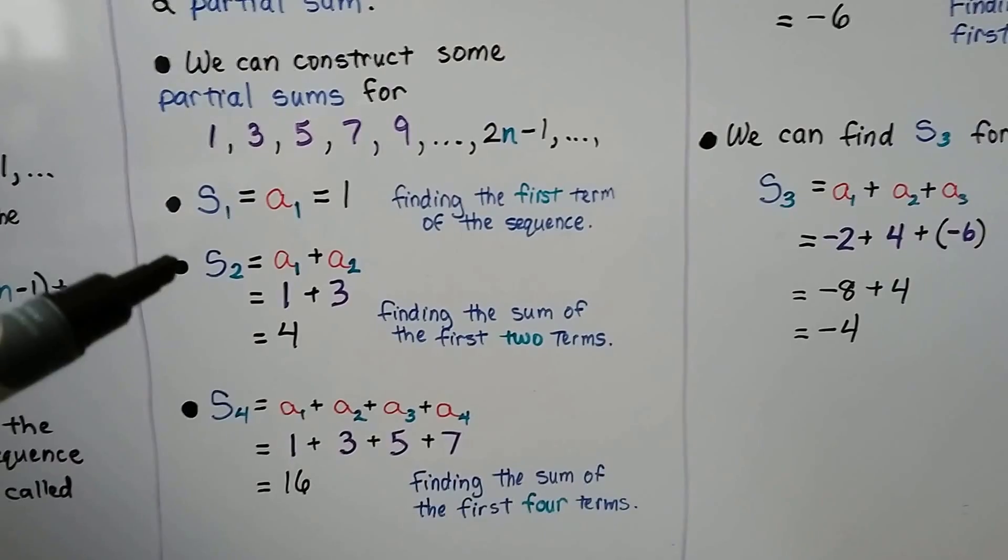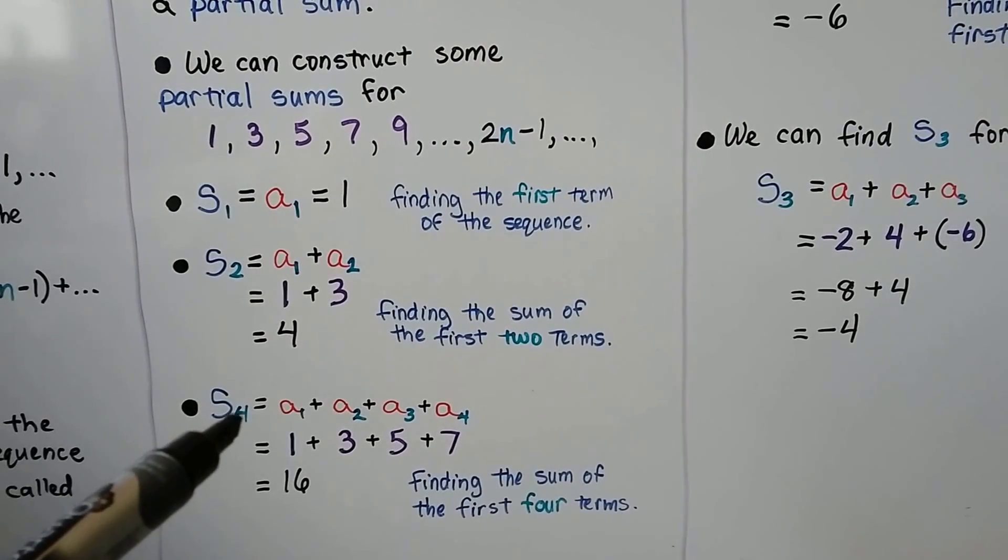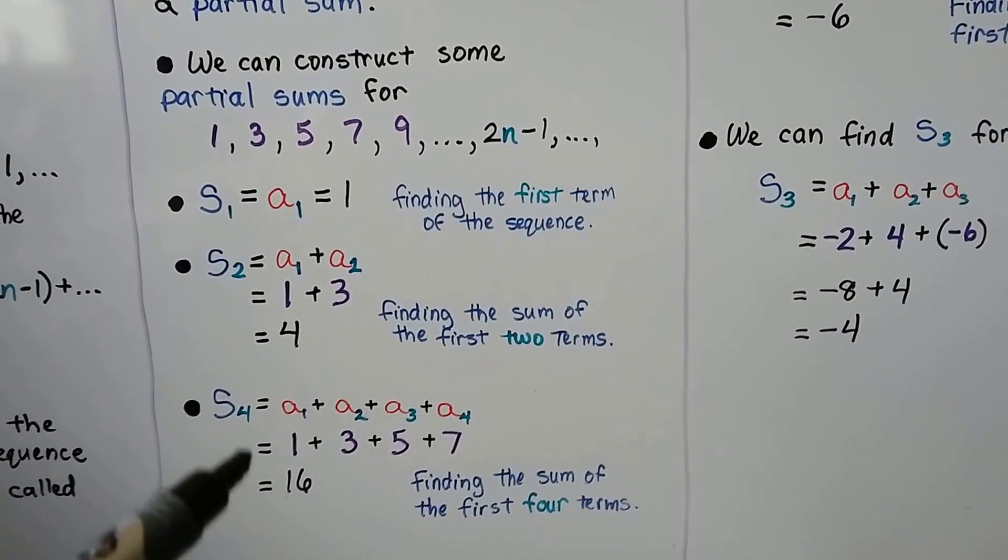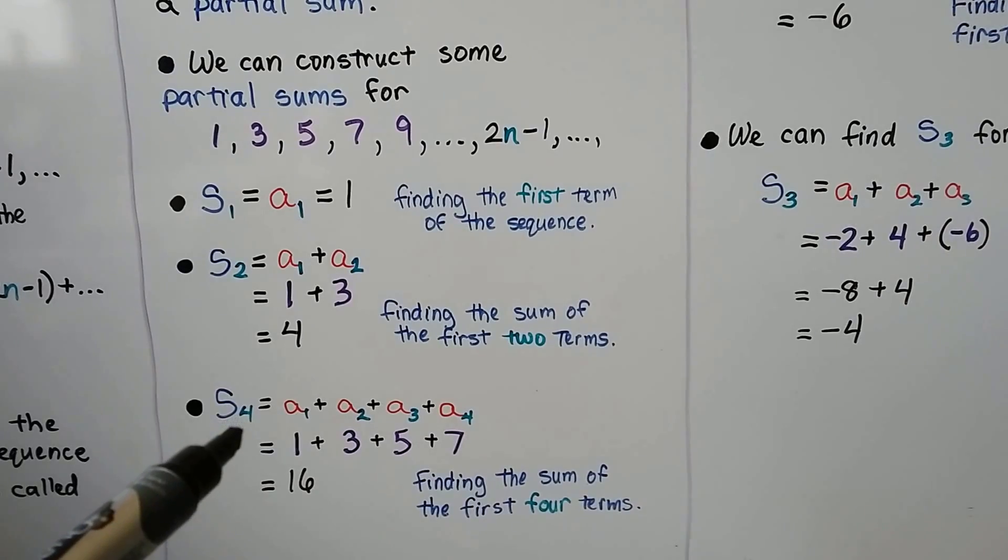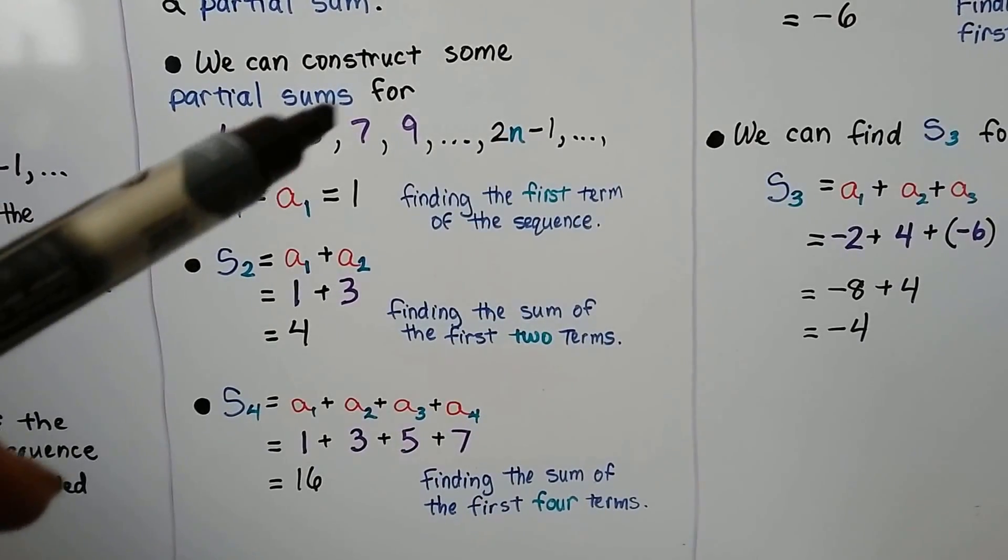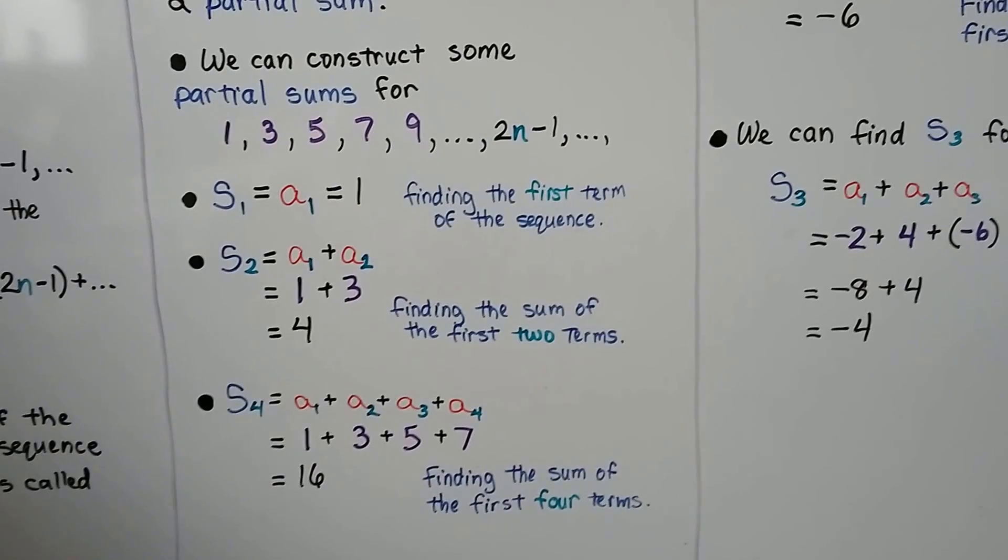For S_4, see the little subscript 4? That means we're going to find the sum of the first four terms. So we add 1 + 3 + 5 + 7. That gives us 16.